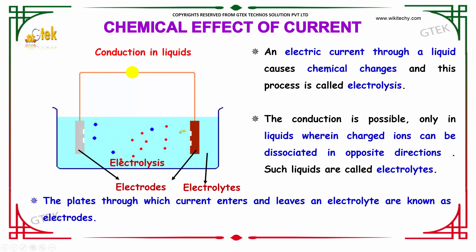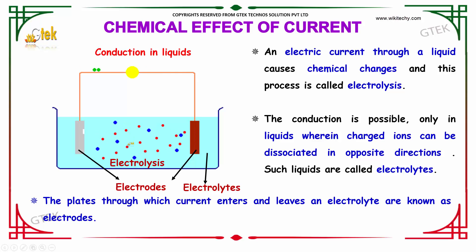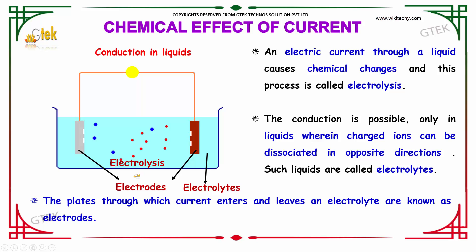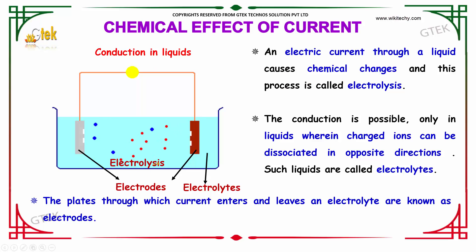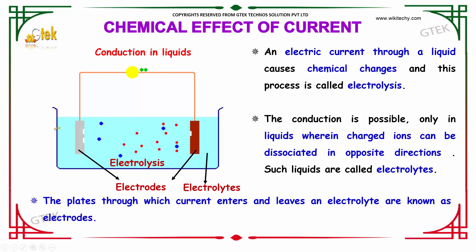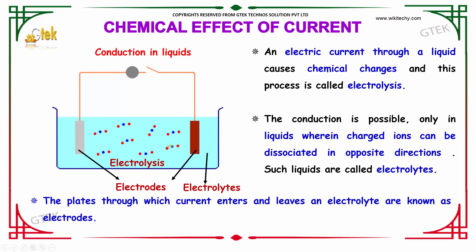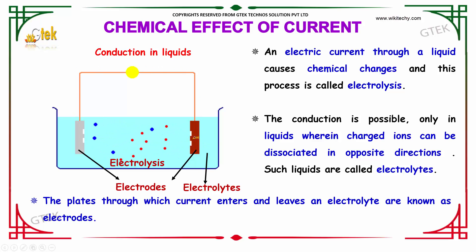There is conduction happening in the liquid between the electrodes if it is placed in an electrolyte — this is referred to as the electrolysis technique. An electric current through a liquid causes chemical changes, and this process is called electrolysis. The conduction is possible only in liquids where charged ions can be dissociated in opposite directions; such liquids are called electrolytes.